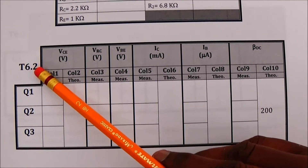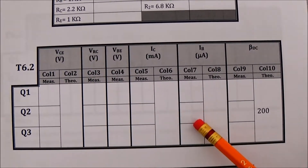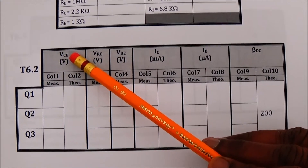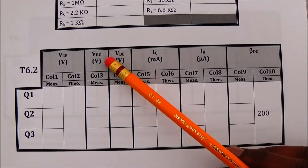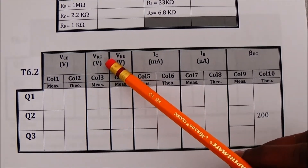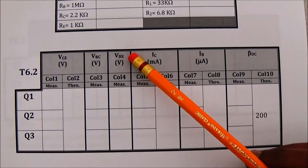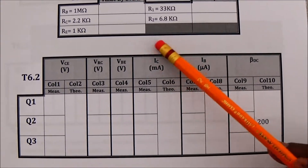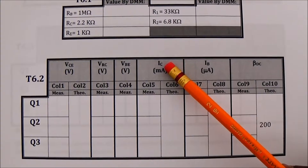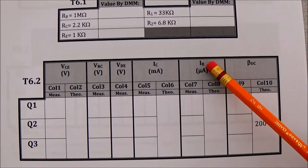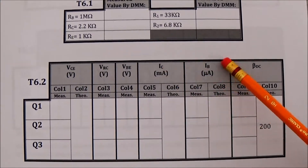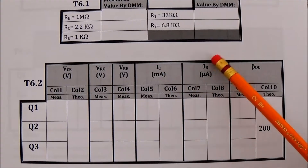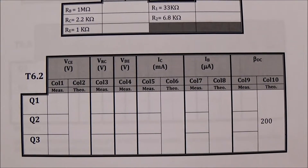Table 6.2 is for the fixed base bias configuration. You are going to measure the voltage across the collector and emitter, across the collector resistor, and between the base and emitter of the transistor. You are also going to measure the current flowing in the collector and in the base. For measuring the currents you should break the circuit at those points and connect the ammeter in series.